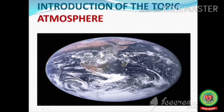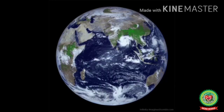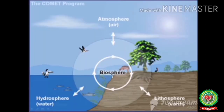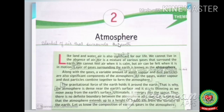Our earth is surrounded by a huge blanket of air called the atmosphere. All human beings depend on the atmosphere for survival. The earth with its spherical shape is divided into three domains: lithosphere, hydrosphere, and atmosphere. These three domains together make the biosphere. The atmosphere — the blanket of air that surrounds the earth — is significant for our life. We cannot live in the absence of air. Air is a mixture of various gases that surrounds the earth. We cannot feel air when it is calm, but air can be felt when it is in motion.